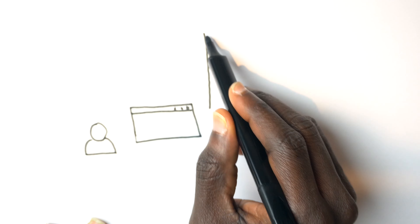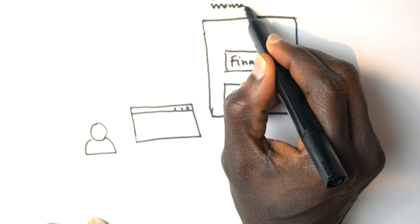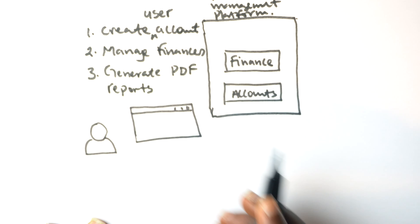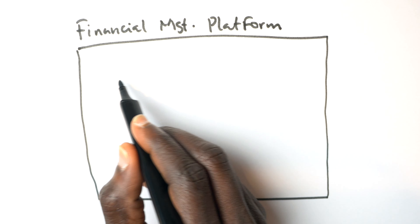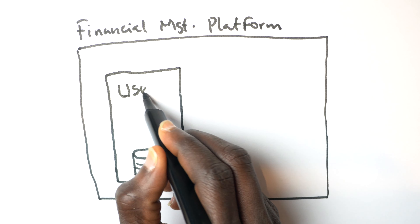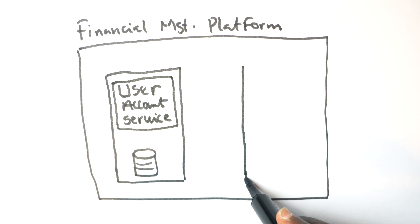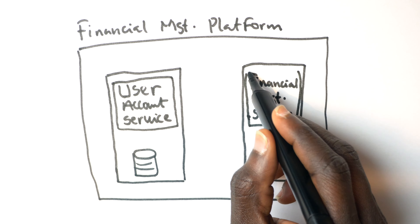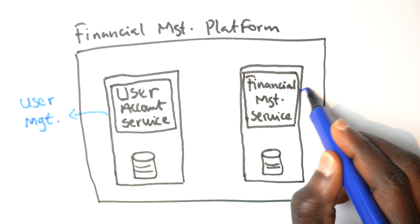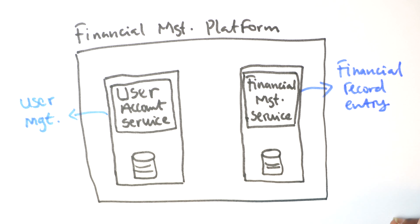Let's say you have a platform that allows users to manage their finances. They can create an account, input their income and expenditure for a certain period of time, and also generate PDF reports. This platform is built using a microservices architecture, resulting in two services: a user account service that manages creating accounts, and a financial management service that handles income, expenditure, and PDF report generation.